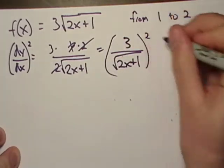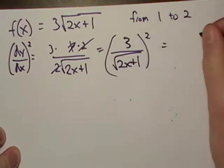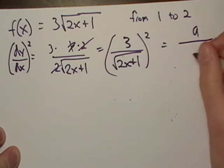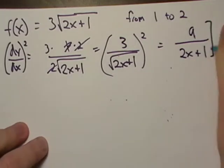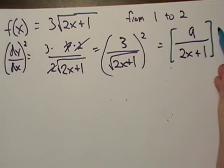Now I want to square this whole guy. What am I up against? I'm at 9/(4(2x+1)). This thing right here, this guy right here, I'm going to end up plugging in.